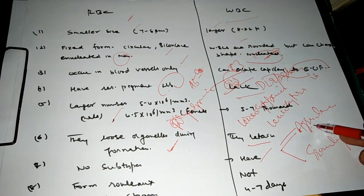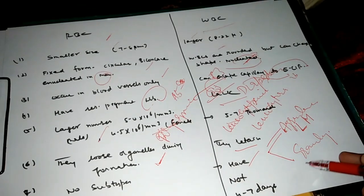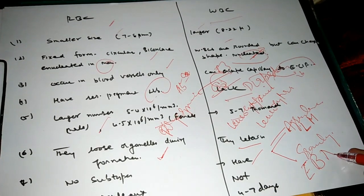Agranulocytes having the lymphocyte and monocyte. Granulocytes are eosinophil, basophil, neutrophil.